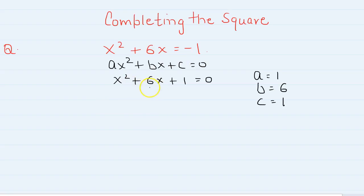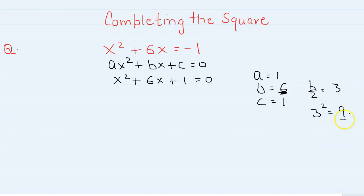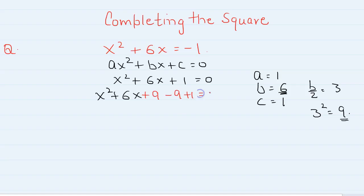Now, in completing the square, the half of b is 3, and 3 squared is 9. So we are going to add and subtract this value here. So x squared plus 6x plus 9 minus 9 plus 1 is equal to 0.